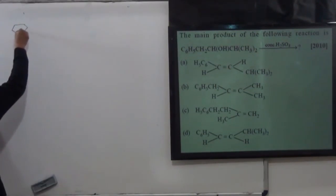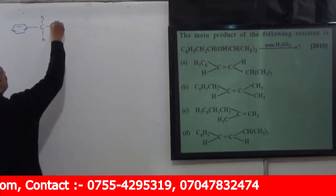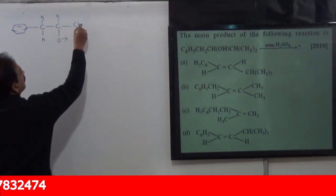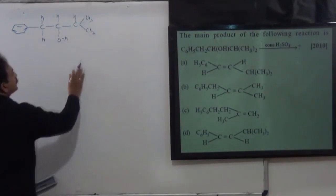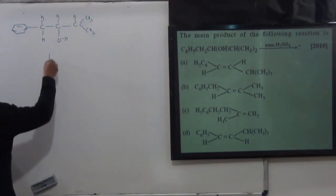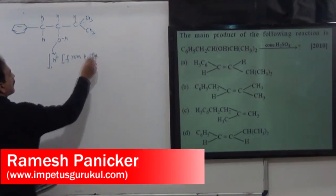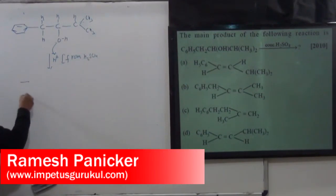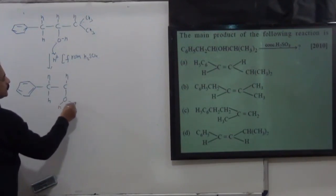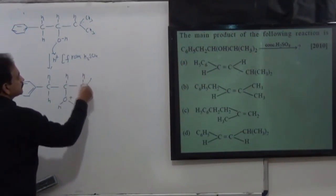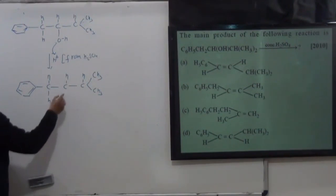So we are given C6H5-CH2-CHOH-CH-CH3 structure. But the question is, the reason is that concentrated H2SO4 presence. In the first step, it will be removed as H2O. In the second step, it will be removed as H2O. So it will form carbocation.